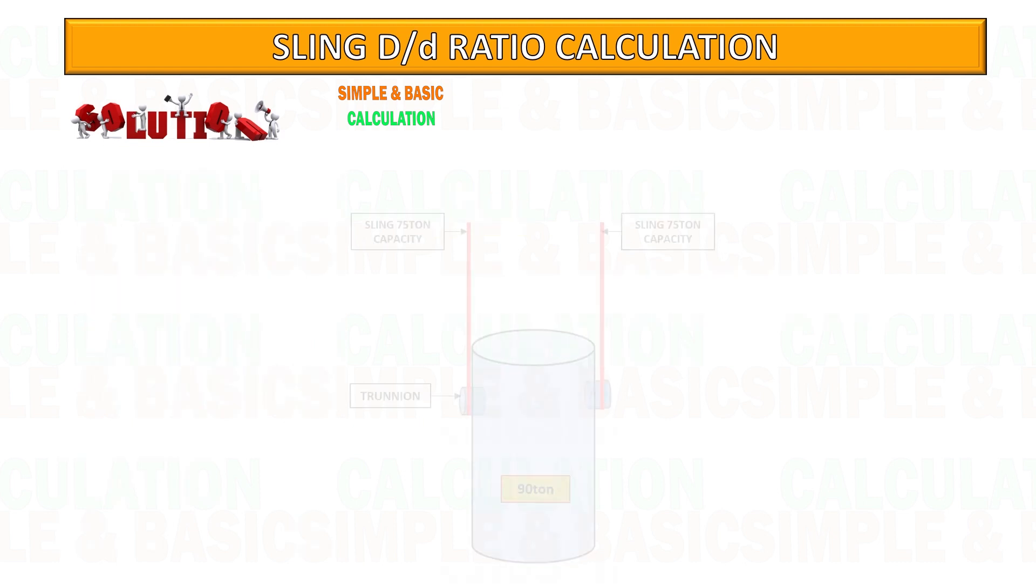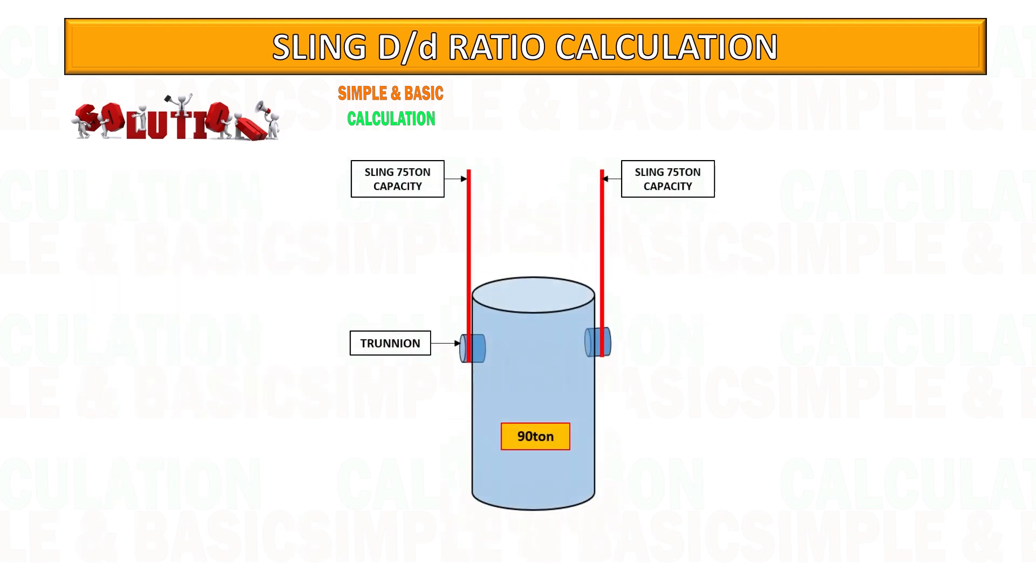Due to reduction factor, the 75-ton sling capacity becomes 62.25 tons. It reduces around 17 percent of its capacity.